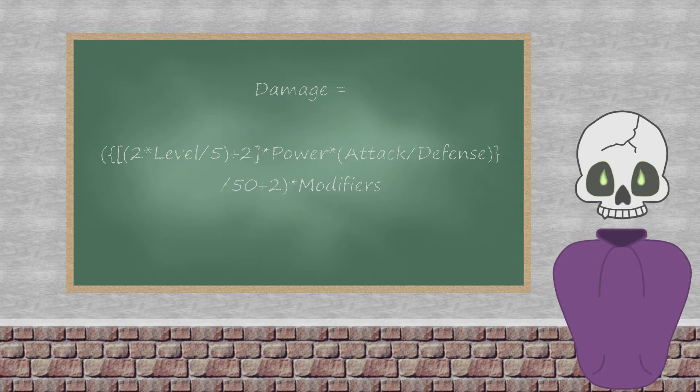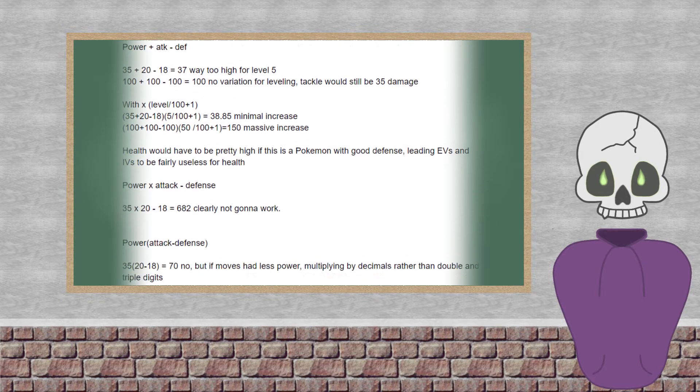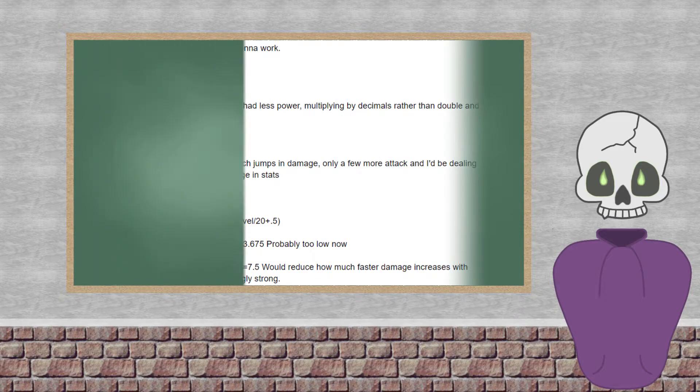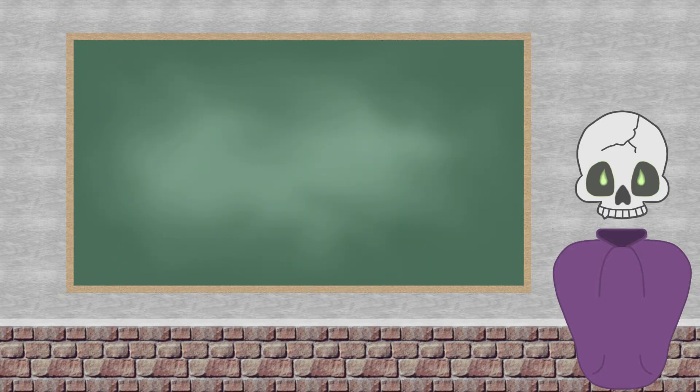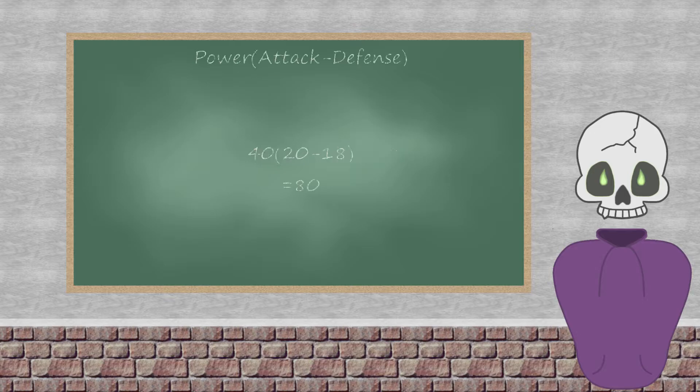The next bit that I question is attack divided by defense? Why divide? Well, I did some experimenting with various equations to recreate similar results but with a simpler equation. Let's go back to the previous example. We will assume the move's power still has to be multiplied because otherwise every move would just add a flat damage to the final result. We will leave level out for now and add it if need be. The equation looks like this. Power times attack minus defense.